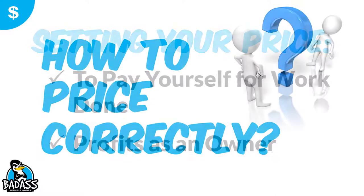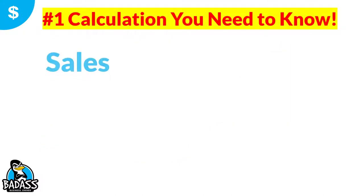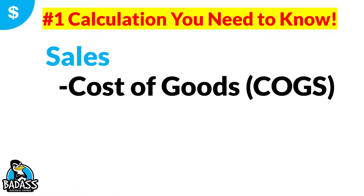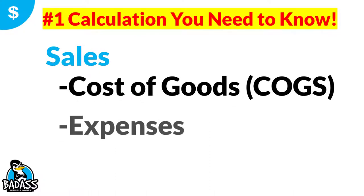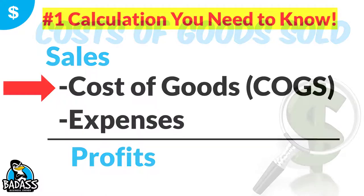What we're trying to figure out is how do you price correctly? The number one calculation to always remember: sales minus cost of goods, minus your expenses, equals your profits. What we're going to focus on is this line right here — cost of goods sold.